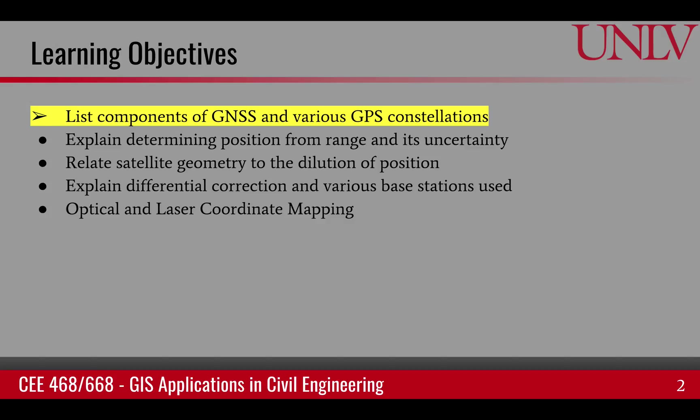Then we'll talk about how these satellites are used to determine position and what is the uncertainty related to that position. Then we'll talk about the satellite geometry and its relation to the term called dilution of position. Then we'll talk about one way of improving positional accuracy called differential correction, and lastly, we'll talk about optical and laser coordinate mapping or surveying.